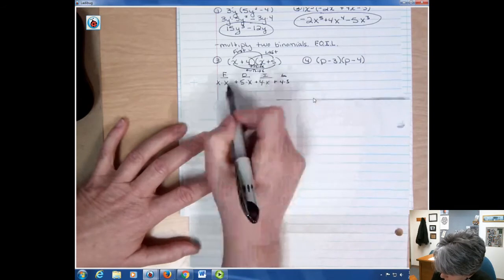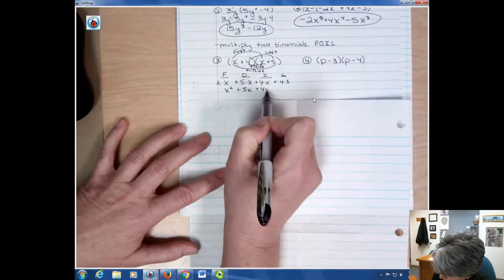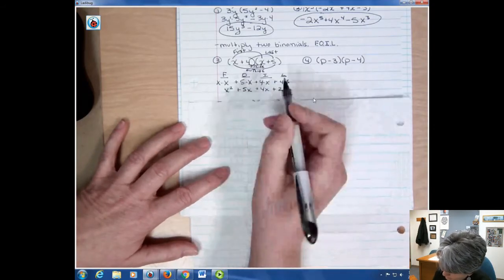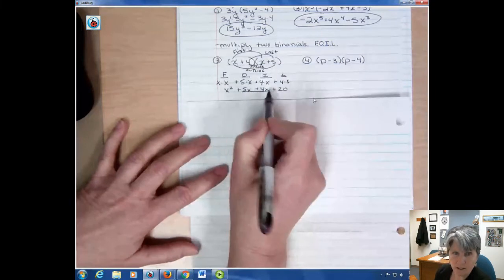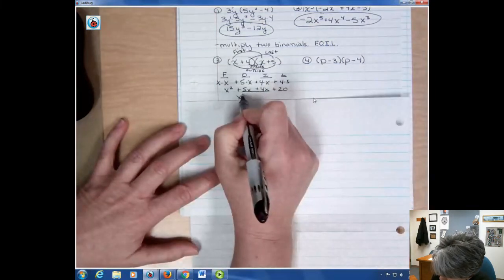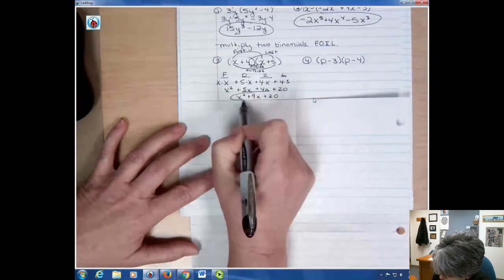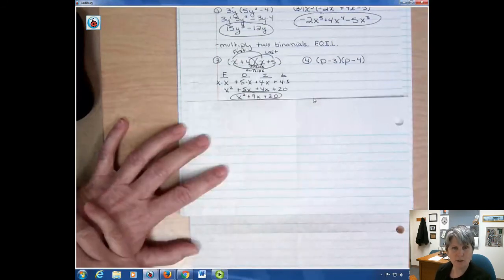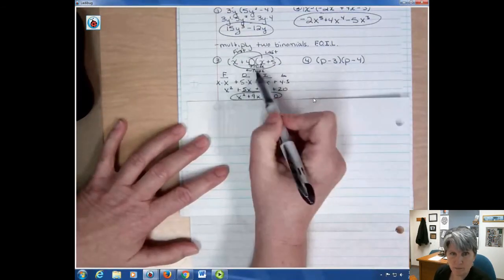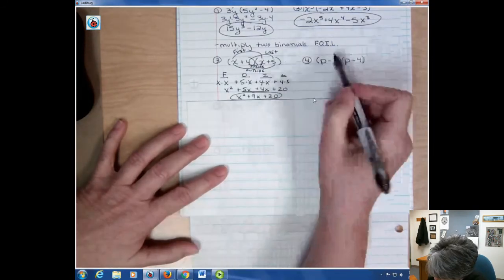And that gives me x squared plus 5x plus 4x plus 20. And then I combine my like terms, because I have like terms there in the middle. x squared plus 9x plus 20. And that's my final answer right there. So I showed kind of excruciating detail, but I wanted to write out what those letters meant and show you where they are. So let's do the second one with detail, but maybe not quite as much.